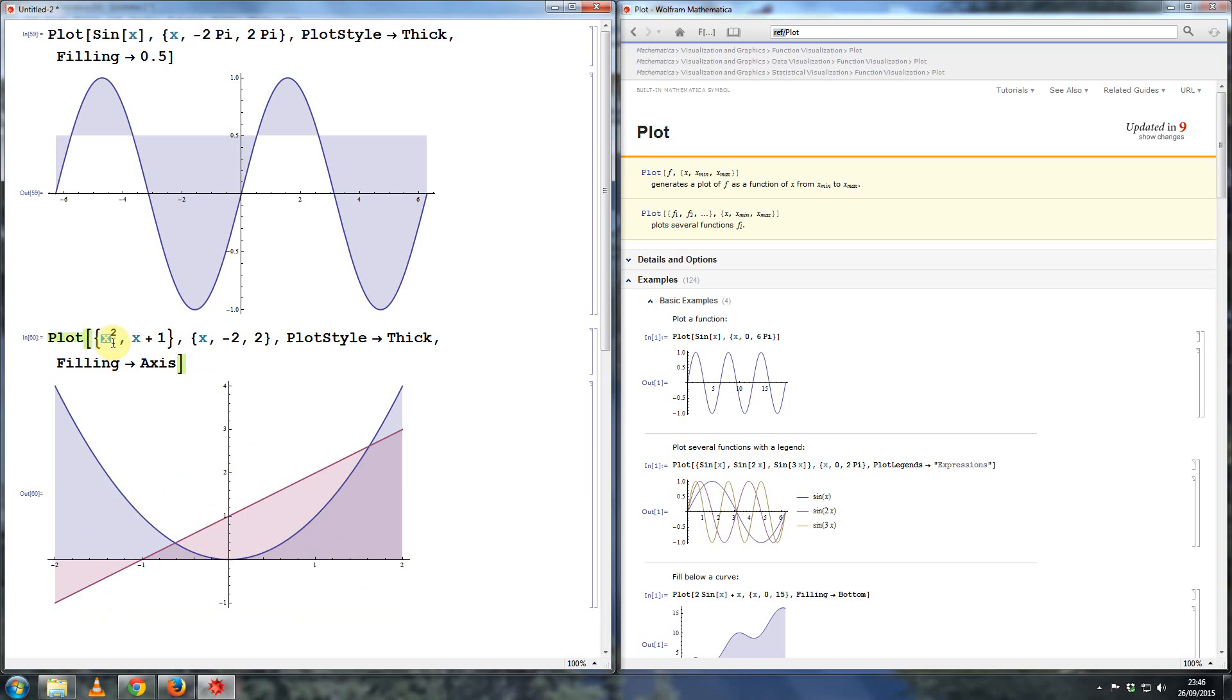Now, if I want to shade the area between these two curves, what you would say is something like this. So you'd say one to two. So that's meaning from the first curve up to the second one. So the first curve being x squared, and the second function being x plus one. So this now shades the area between these two. But it will also shade this area here, because you plotted the function from minus two to plus two. If you only want to shade it from there to there, then I'll show that in the next example.